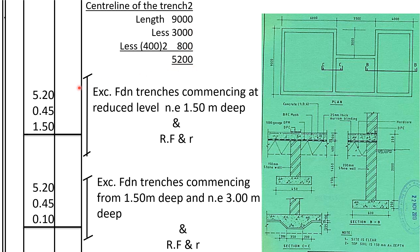For excavating the trench it shall be 5.2 times the thickness of the trench, which is 0.45 — you can see the thickness is 0.45. The depth of the first stage is 1.5: excavate foundation trenches commencing at reduced level, not exceeding 1.5 meters deep, and refill and run — that volume of soil you add to refill and run. The next stage is excavate foundation trenches commencing from 1.5 meters deep and not exceeding 3 meters deep. Take the center line, the width of the trench, and the depth for that stage, and add to refill and run.